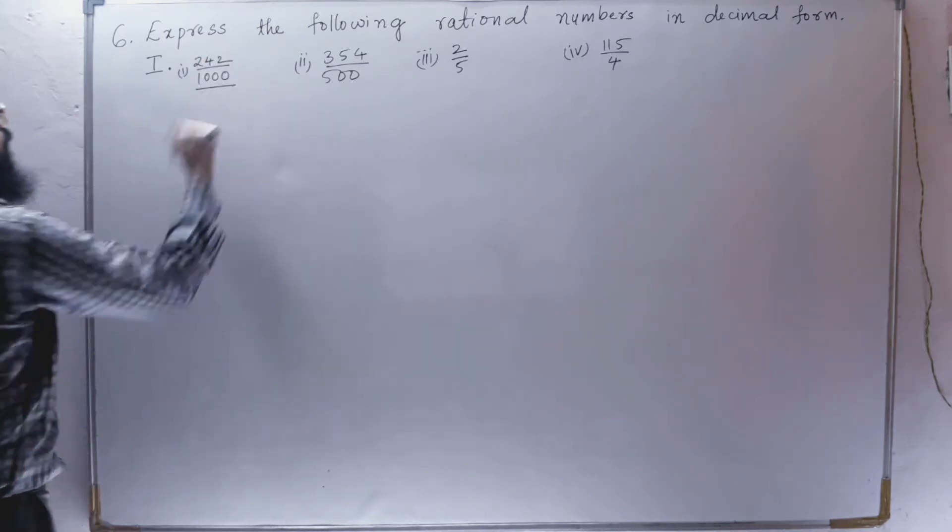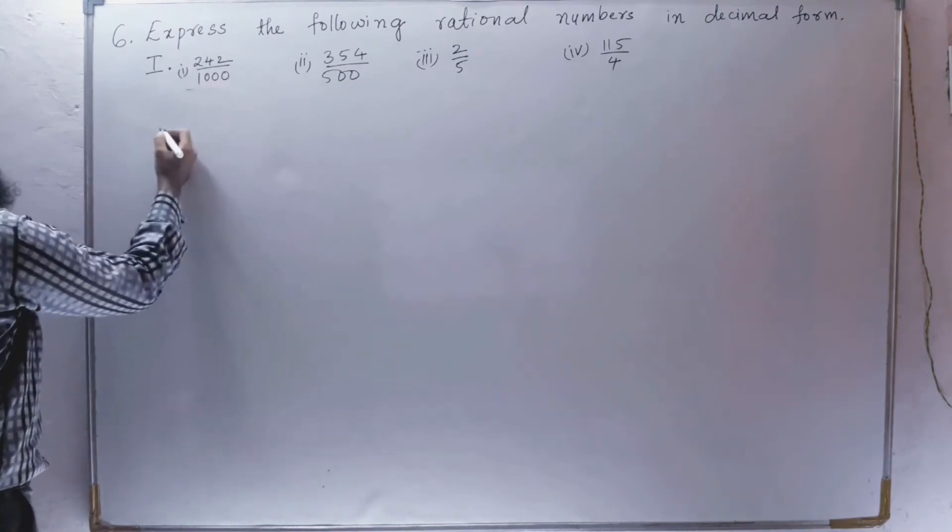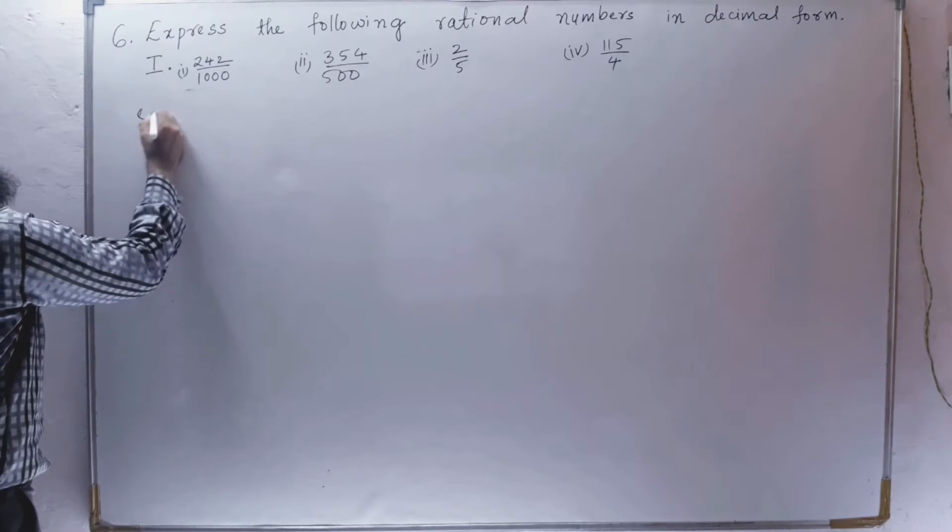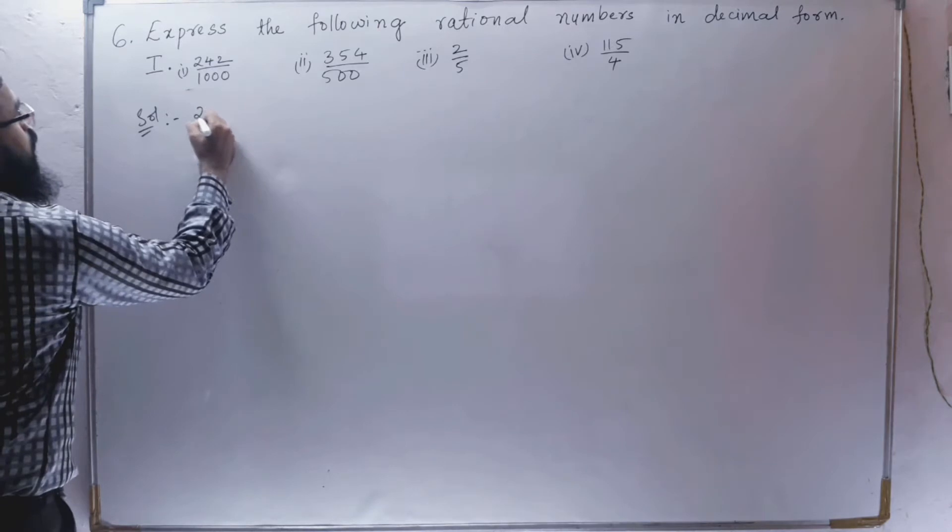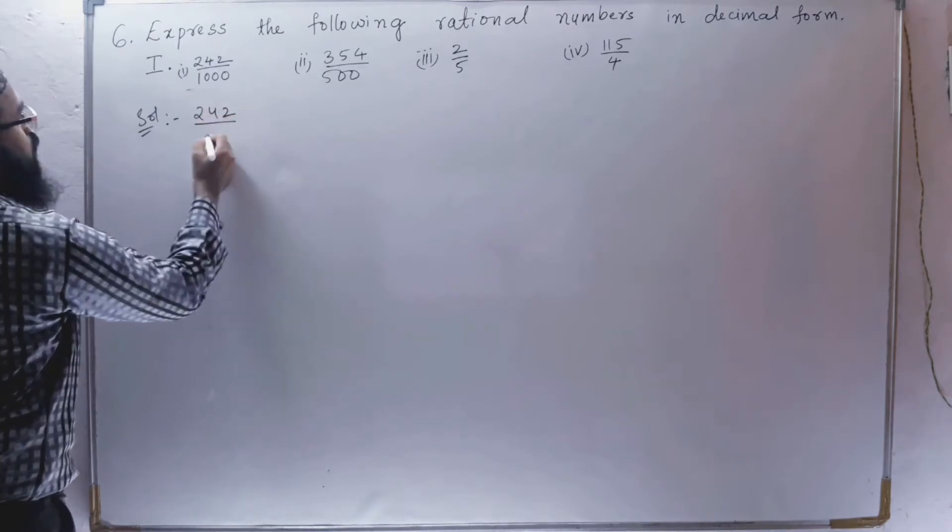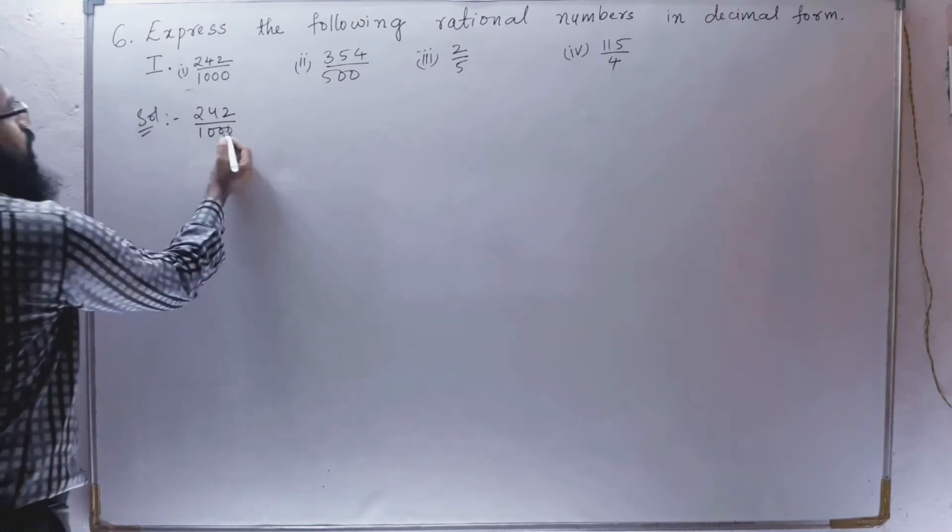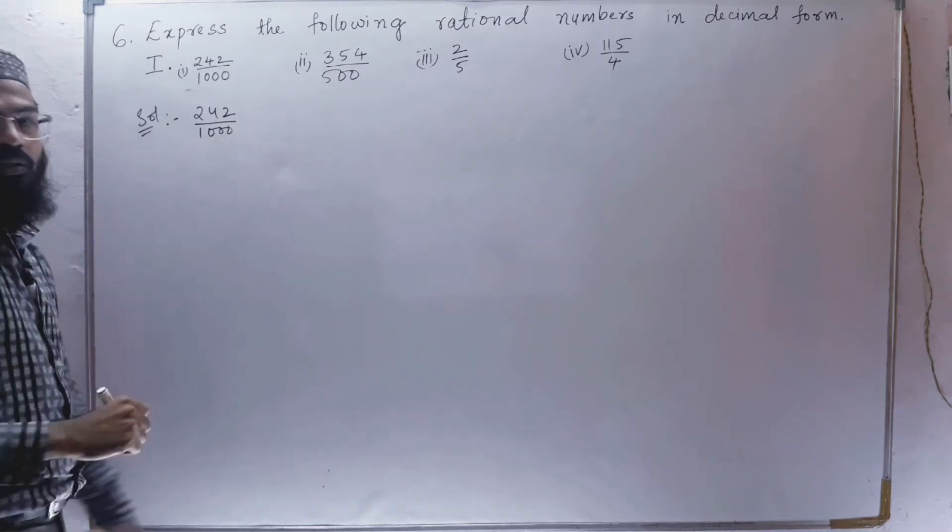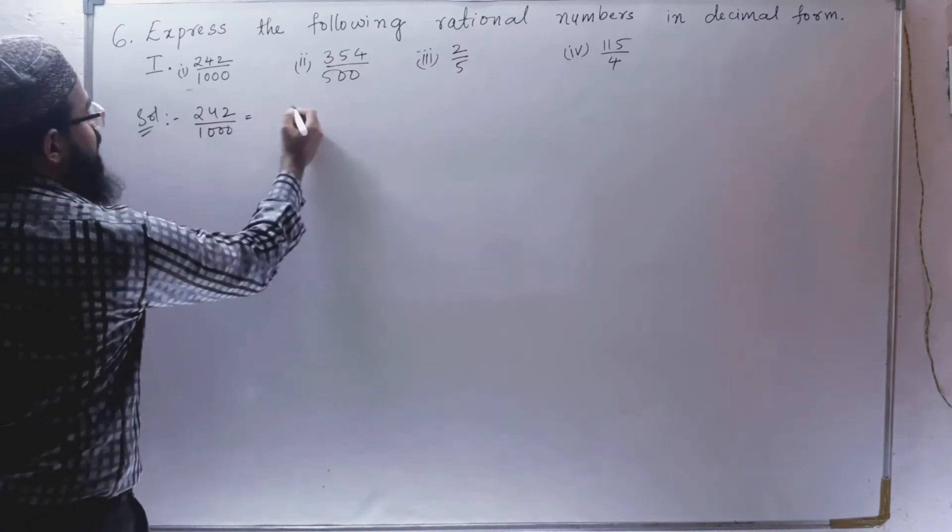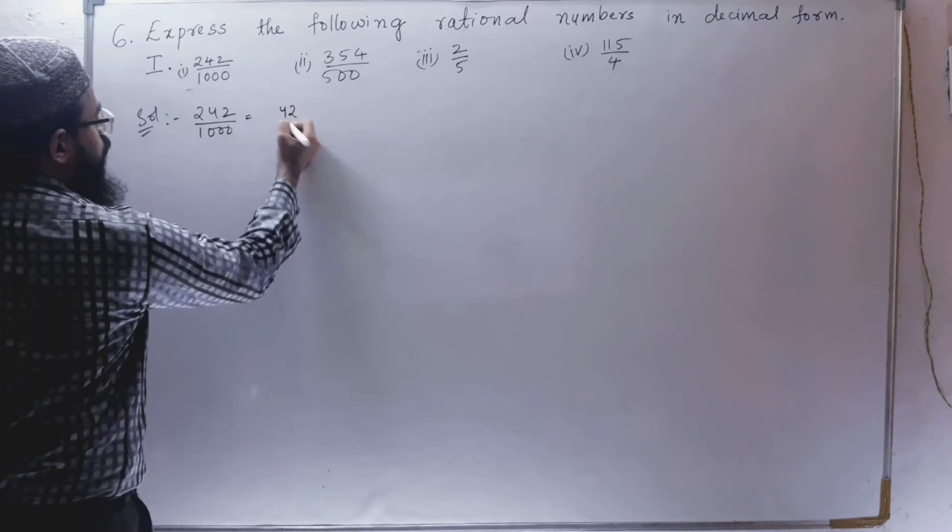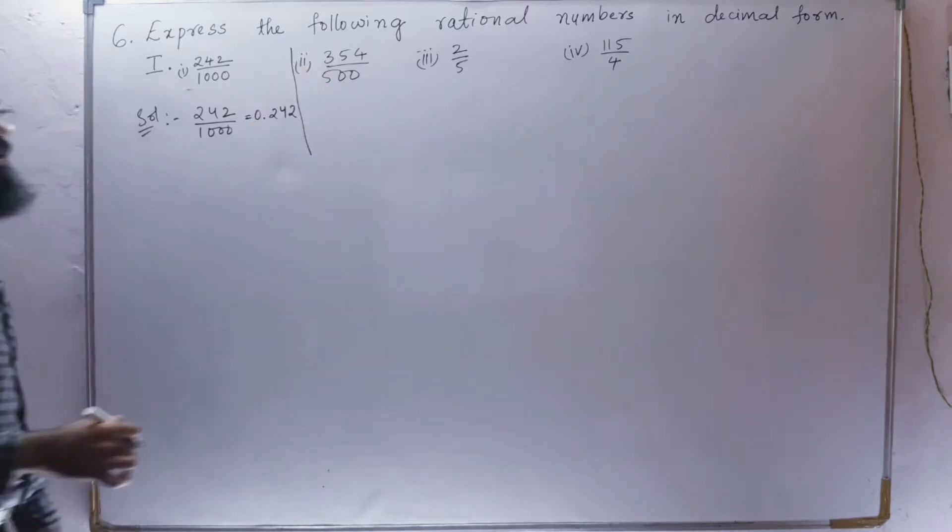So first we solve 242 by 1000. Solving the first bit is very easy. Why? Because we have to see how many zeros are present in the denominator. If there are three zeros, we are going to put the decimal after three digits from backside. That is 0.242. First bit is completed.